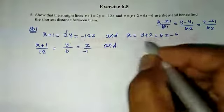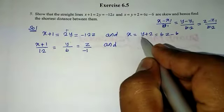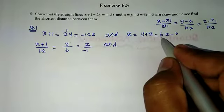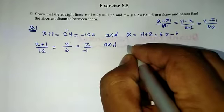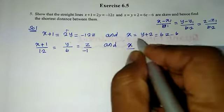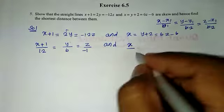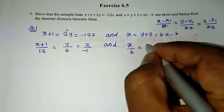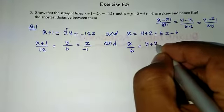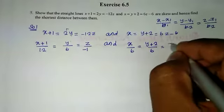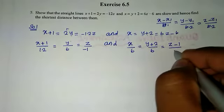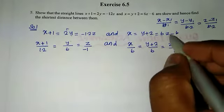For the second line, x has coefficient 1 and z has coefficient 6, so the whole equation is multiplied by 6. Dividing: x over 6 equals y plus 2 over 6 equals z minus 1 over 1.